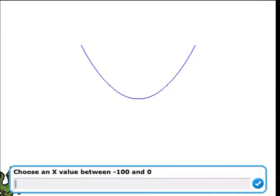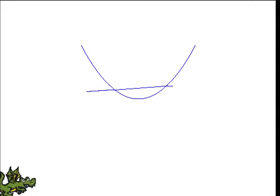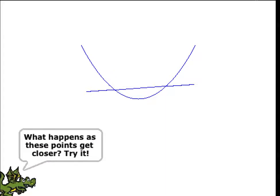We're going to start by picking a negative x value for one point of a secant line, followed by a positive value for the other point. The program is then going to draw the secant line.